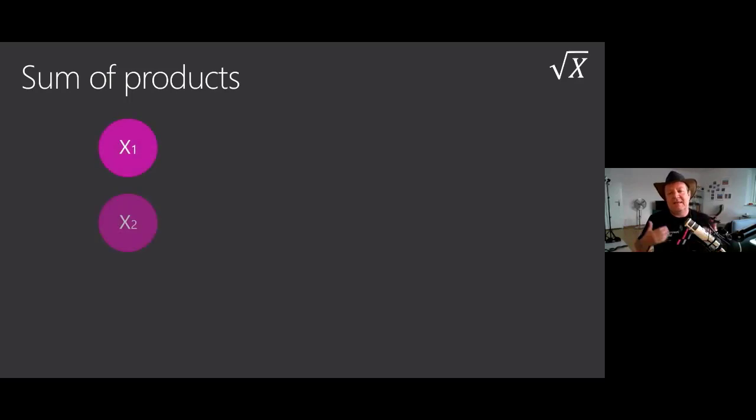First of all, let's start by thinking we have a system, and this system has a number of inputs. We don't know in advance how many inputs we're going to have. We have X1, X2, XN - a variable number of inputs.